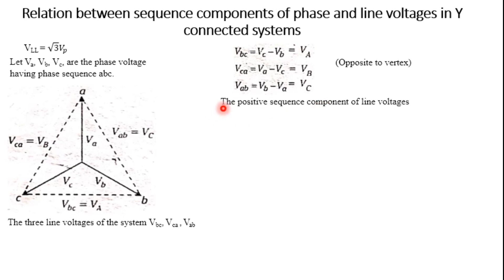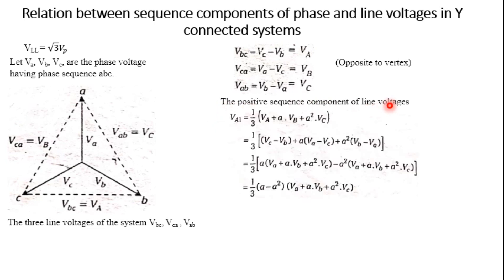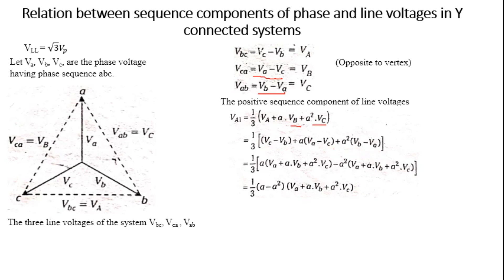For the positive sequence component of the line voltage, do not get confused here. We know the equation: VA1 = (1/3)(VA + A·VB + A²·VC). Now VA can be written as VBC which is VC minus VB; A·VB can be written as VA minus VC; and A²·VC can be written as VB minus VA. Substitute and simplify.